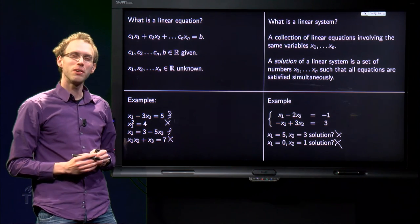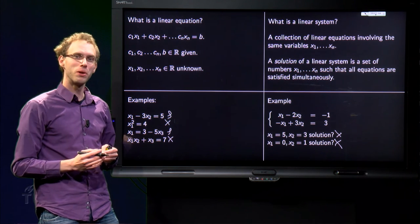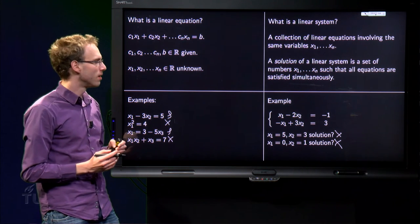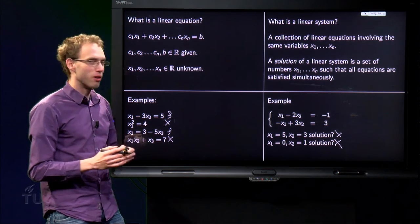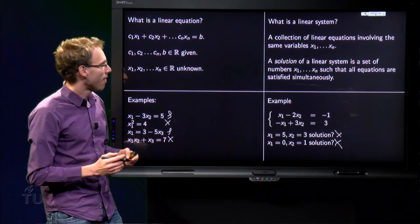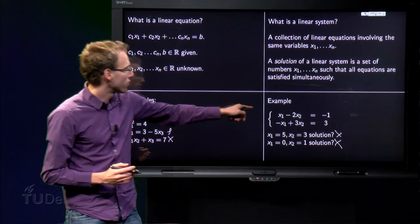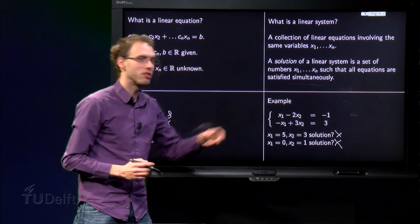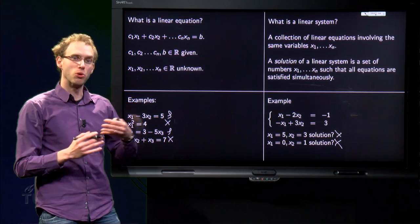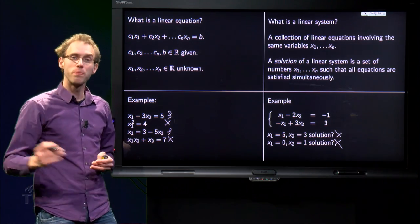Can you see two numbers, X1 and X2, which are a solution of the system? Take a look first. Well, maybe you can do some substitution or figure it out in some other way. But if you take X1 equals 3 and X2 equals 2, then we get 3 minus 4 equals minus 1, which is OK, and minus 3 plus 6 equals 3, which is OK.